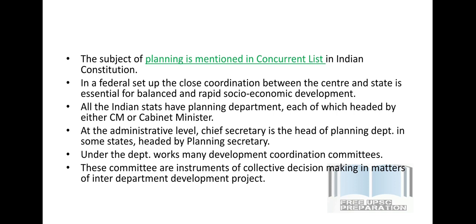As you know, the 7th schedule of the Indian Constitution has three lists: the Union List, which can only have union laws made; the State List, which can only have state laws made; and the third is the Concurrent List, which can have both union and state laws made. So planning is put in the Concurrent List in the 7th schedule of the Indian Constitution.